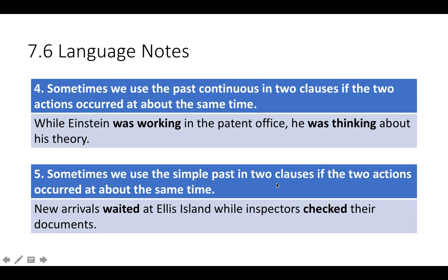Now, if the two clauses express actions that occurred at about the same time, I might use while with both clauses and past continuous: while Einstein was working in the patent office, he was thinking about his theory. The same thing can happen using simple past in both clauses when the two actions occurred at about the same time: new arrivals waited at Ellis Island while inspectors checked their documents.